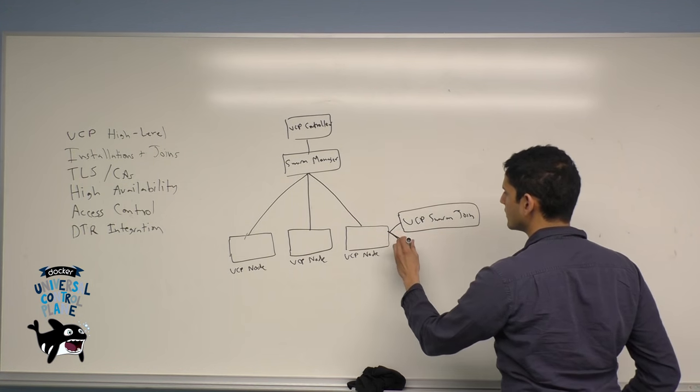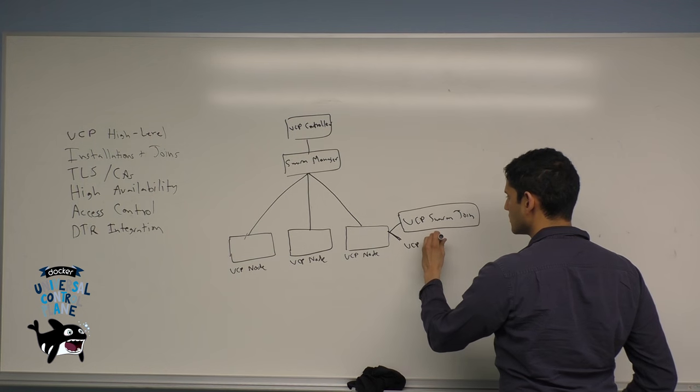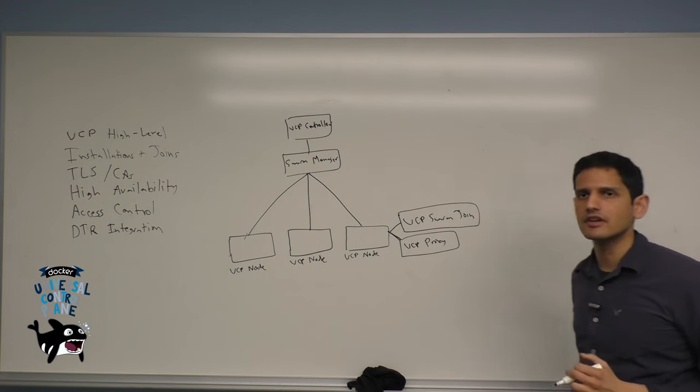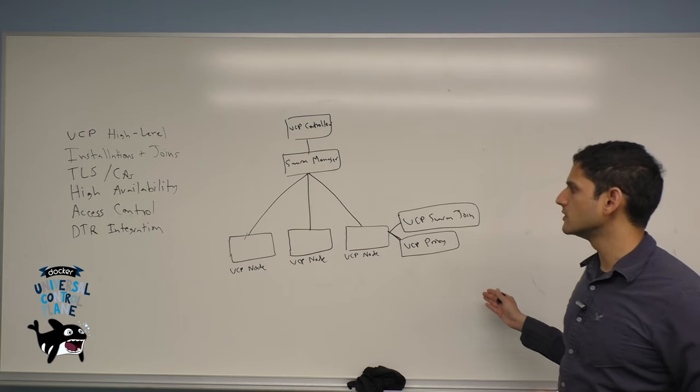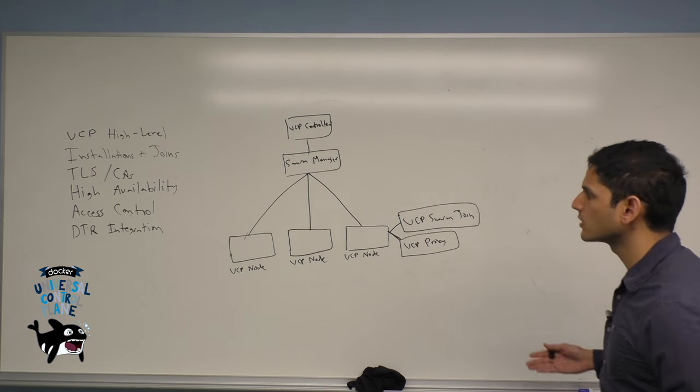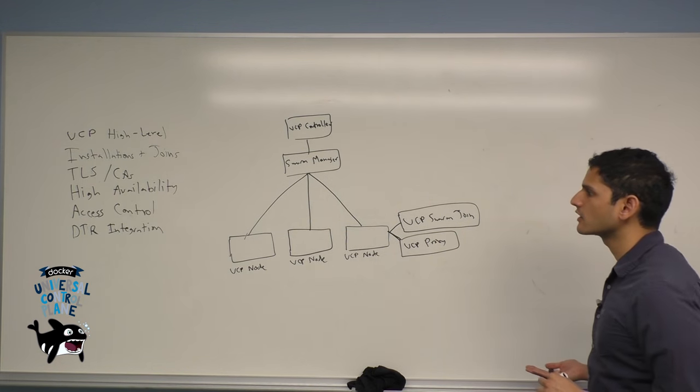The second container is the UCP proxy. We mentioned before that UCP is secured entirely through TLS. The UCP proxy ensures that all of your communications have direct access to the socket. This is what ensures that you have secure comms across your entire cluster.